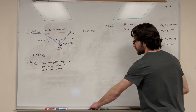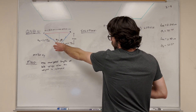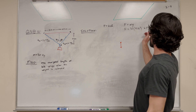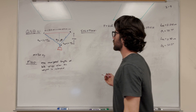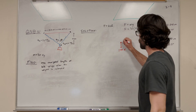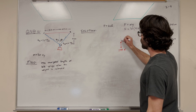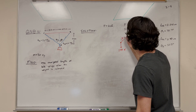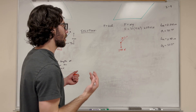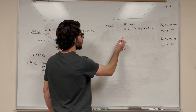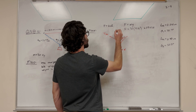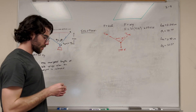Now let's draw our free body diagram. We'll draw it at point A because that's where all the forces converge. We have our weight of 294 newtons pulling down. Then we have tension AB at 38.7 degrees, and tension AC at 50.2 degrees going the other way.